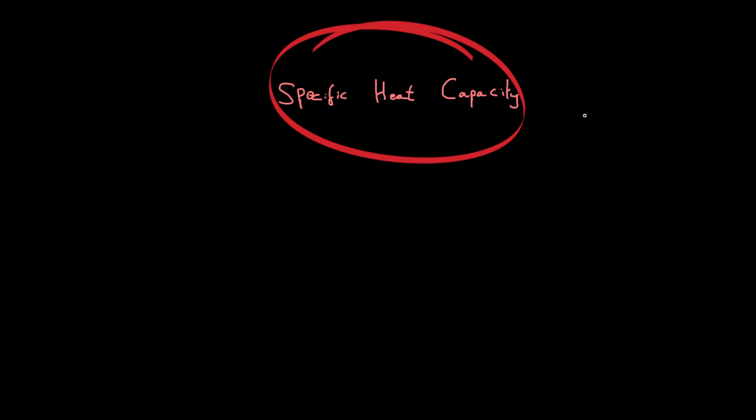Okay, hi. So in this video we're going to speak a bit about specific heat capacity. Now, the specific heat capacity is a particular property of a certain material. You'll remember in previous videos where we spoke about energy transfer, we mentioned that the actual material that something is made of affects how much energy is transferred. Whether it's a good conductor or a good insulator, that is all affected by the actual material.